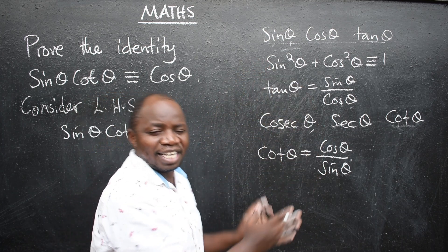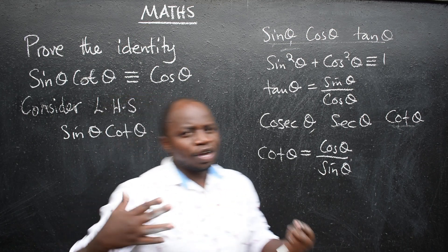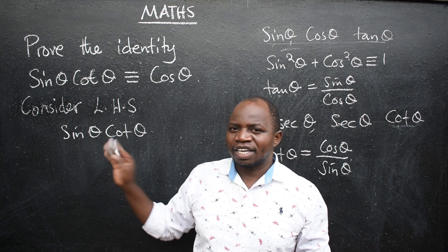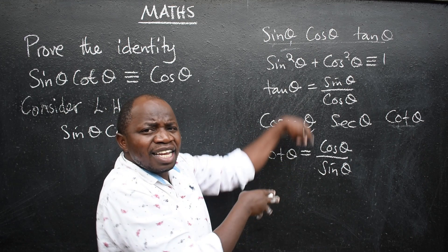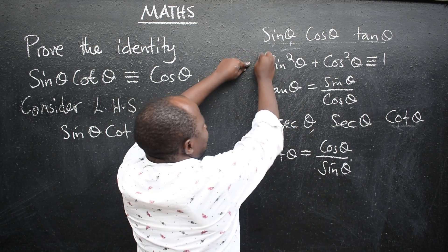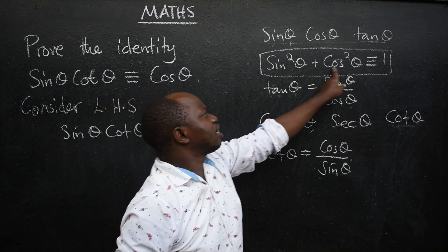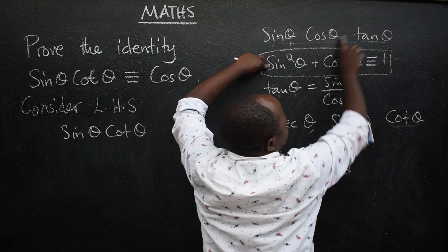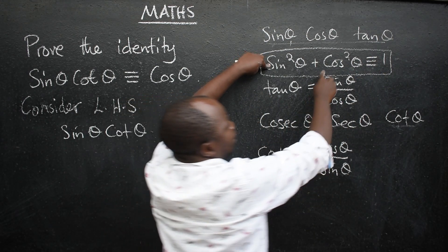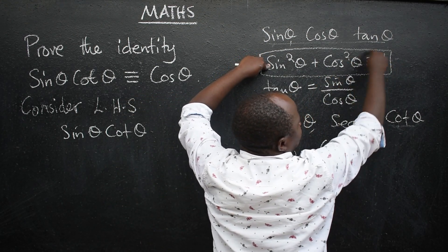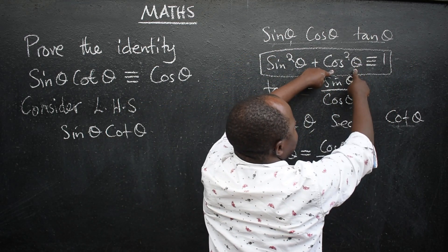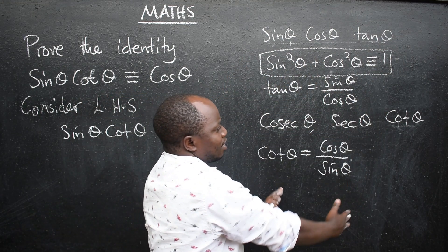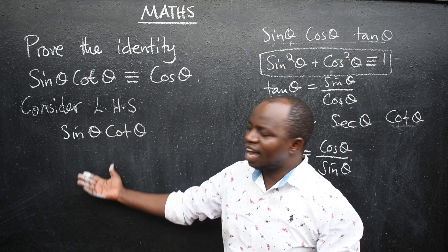These are not the only identities available. When you are given any identity to prove, look at what you've been given and use identities similar to what you need. From sine squared theta plus cos squared theta equals one, we can generate more identities: sine squared theta equals 1 minus cos squared theta, and cos squared theta equals 1 minus sine squared theta.